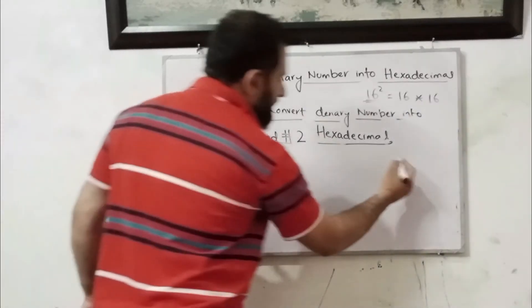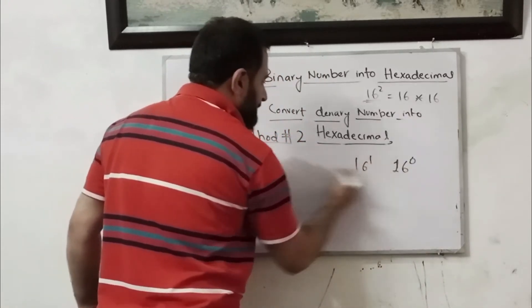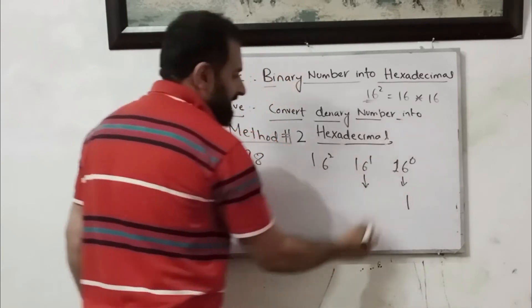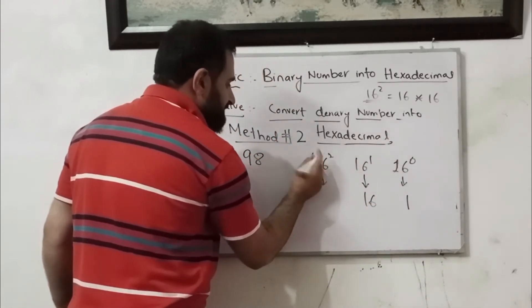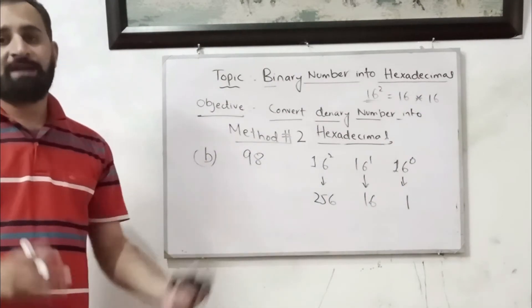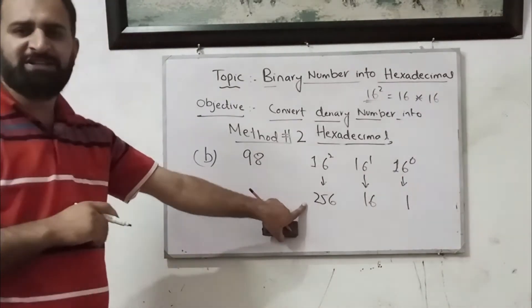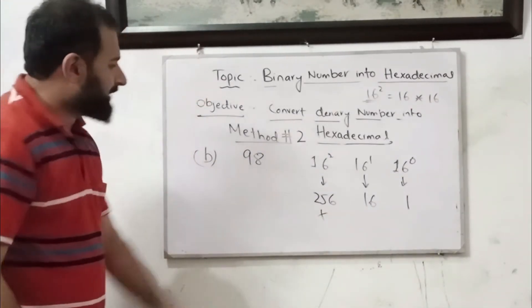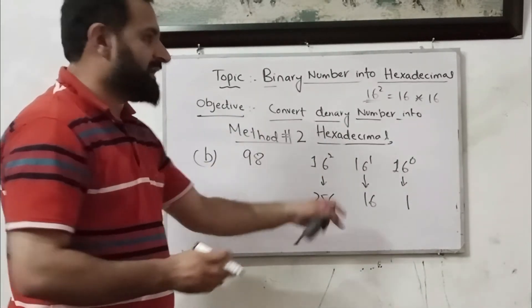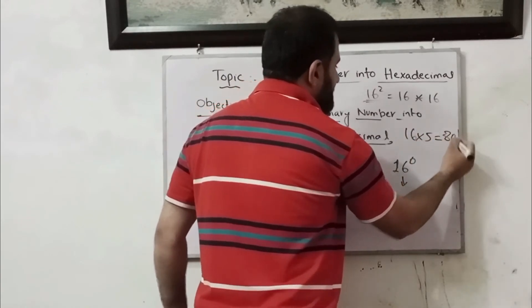Let's solve that. First I need to write 16 power 0, 16 power 1, and 16 power 2, which is 256. We want to convert this decimal number 98 into hexadecimal. A calculator is not required for this kind of calculation — it's also prohibited in exams. Can we use 256? No, we cannot, so I will put a cross here. I will use 16 power 1, which is 16.